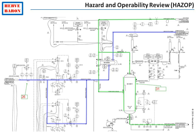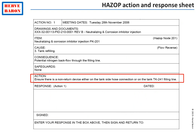Such a safeguard could be a hard device like a pressure safety relief valve, or a soft device such as an instrumented safety function. If there is none, then the HAZOP will request an action from the engineer by issuing a HAZOP Action Sheet, which shall be answered and closed out by the engineer.